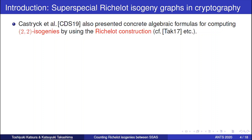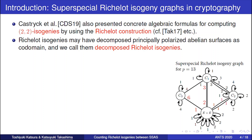Katsura et al. also presented concrete algebraic formulas for computing (2,2)-isogenies by using the classical Richelot construction, so such isogenies are also called Richelot isogenies. This graph is the super-special Richelot isogeny graph for small characteristic p equal to 13. This vertex is a genus-2 curve C3, and this is a decomposed abelian surface E times E.